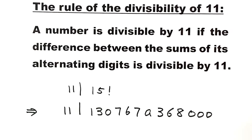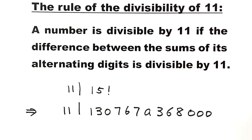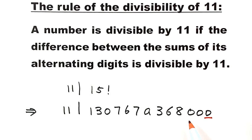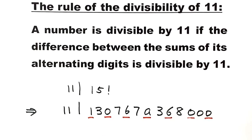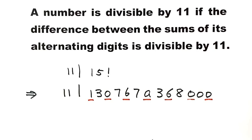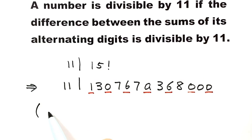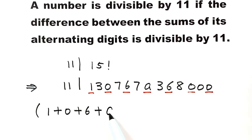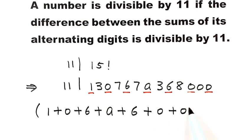First, let's label the digits in the odd places: 0, 0, 0, 6, 8, 6, 8, 6, 0, 1. Then let's do the sum of the digits in the odd places: 1 plus 0 plus 6 plus 8 plus 6 plus 0 plus 0.